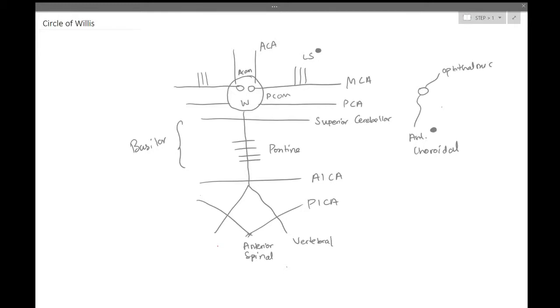Having discussed the Circle of Willis, let's talk about the strokes, aneurysms, and high-yield points when it comes to the cerebral circulation.